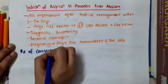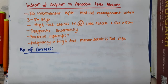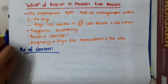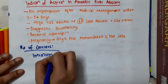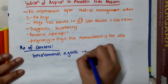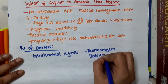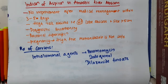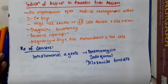For the treatment of carriers, intraluminal agents can be used, such as paromomycin, iodophenol, and diloxanide furoate.